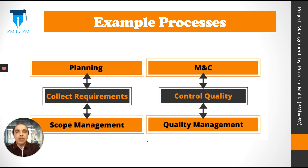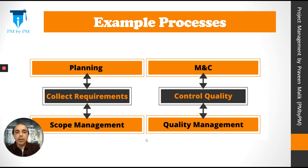For example, let's consider two processes. Number one: collect requirements. Collect requirements is the gathering of requirements and documenting what we have to do in the project. It's part of planning because we are planning something — thinking about the future and what needs to be done. It's also part of scope management because requirements belong to scope. Number two: control quality. Control quality is part of the monitoring and controlling process group because we are testing, inspecting, finding issues and defects. Similarly, control quality belongs to the quality management knowledge area because we are controlling the quality of a project. So each process belongs to one process group and one knowledge area.